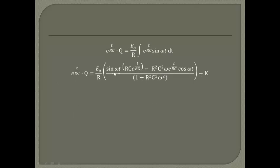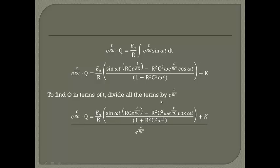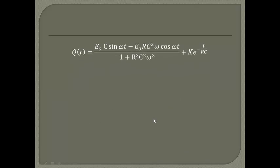Remembering the equation from before, we substitute our solved integral back in. Then, to find Q in terms of t, we divide all terms by e^(t/RC), giving us Q(t) = [E₀C sine(ωt) − E₀RC²ω cosine(ωt)] / (1 + R²C²ω²) + K · e^(−t/RC).